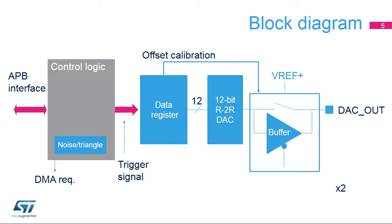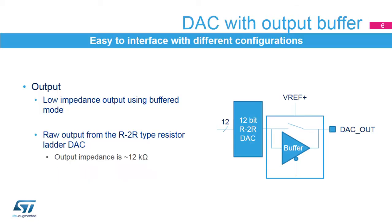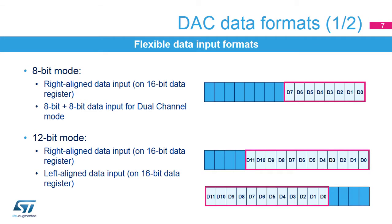Here you can see the simplified block diagram of the digital-to-analog converter. The STM32H7 integrates two of them. The DAC block is supplied by VDDA. The DAC output can be buffered for low-impedance loads. When unbuffered, the output is directly connected to the R2R resistor ladder network type of DAC. The DAC can support different input formats.